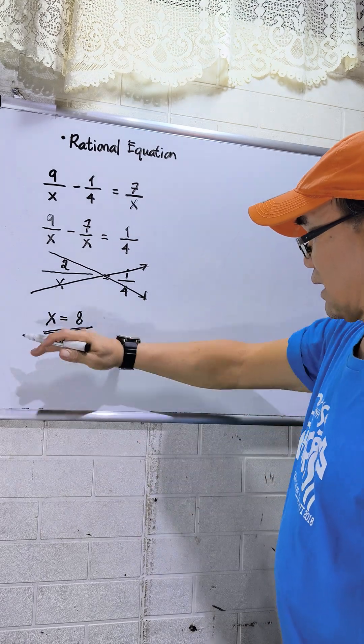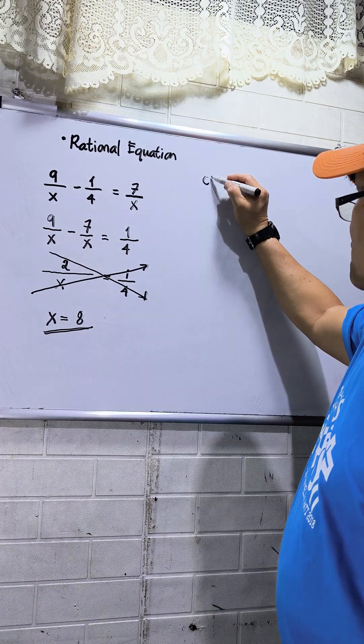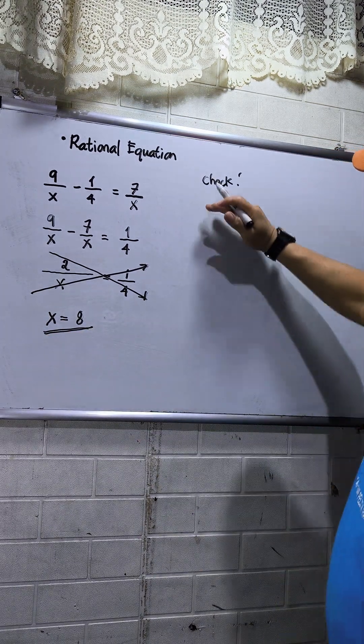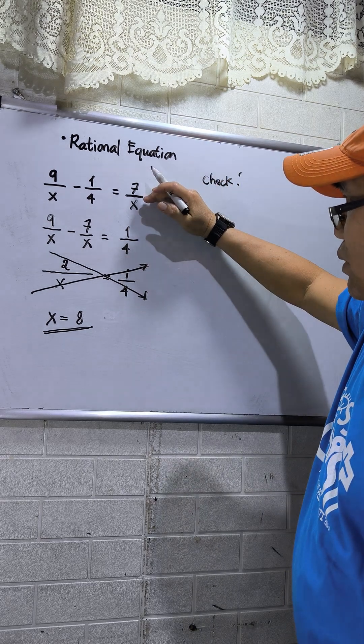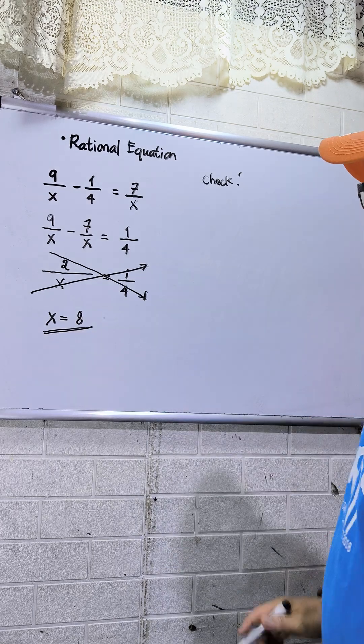So to make sure that my x value is correct, I will check, or I will apply checking. So to check, I will go back to the original equation. So I will plug in x equals 8.